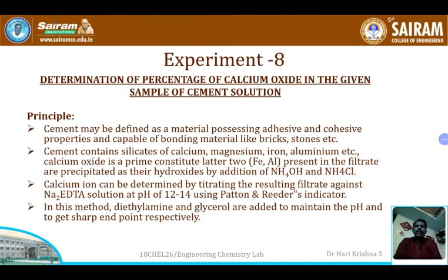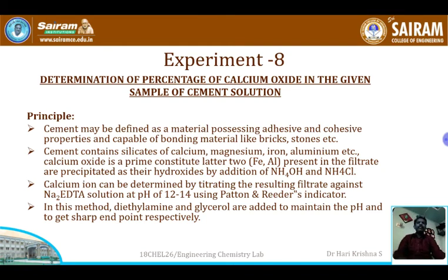Good morning. Our next experiment is the determination of the percentage of calcium oxide in the given cement solution. Cement is well known — it is used to bind bricks, stones, and iron silica to form RCC roofs. We are going to determine the percentage of calcium oxide present in the given cement solution by taking a cement sample and dissolving it.